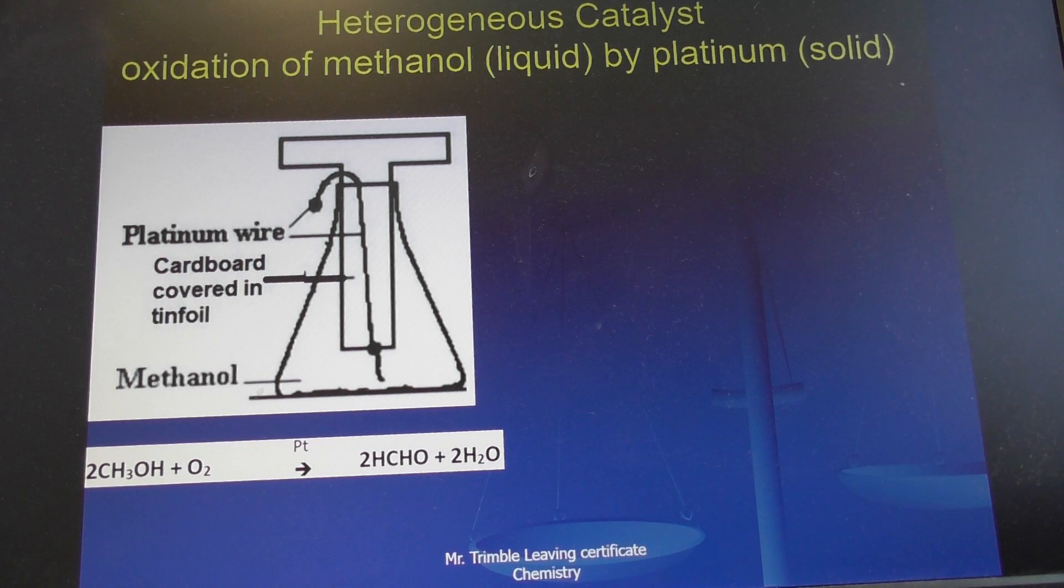It's a little wire of platinum that's attached or clinging to the tin foil which wraps around the carbon T-piece. The tin foil will effectively prevent the carbon from being burned. Then you have methanol placed here at the bottom as a liquid.